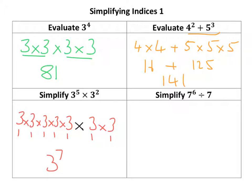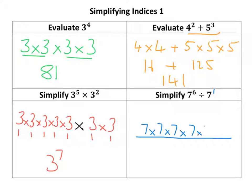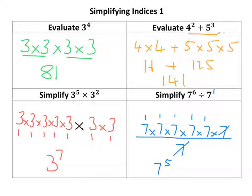Similar sort of thing with this one. Remember, 7 on its own is actually 7 to the power of 1. Writing it as a fraction: 7 to the power of 6 on top, and 7 on its own on the bottom. I can cancel out what's on the bottom with anything on the top that's equivalent. So counting what's left — 1, 2, 3, 4, 5 — that gives 7 to the power of 5. So evaluate means find a value for, and simplify means write in a simpler form.